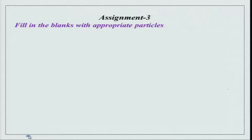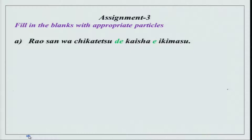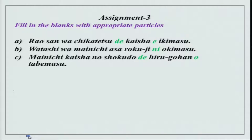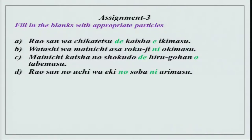The third assignment is fill in the blanks with appropriate particles. We have done a lot of particles: wa, ka, mo, ne, yo, de, ni, o. You need to fill all the particles properly, the ones which fit only. Rao san wa chikatetsu de kaisha e ikimasu. Watashi wa mai nichi asa rokuji ni okimasu — ni is for time. Mai nichi kaisha no shokudou de hiru gohan wo tabemasu — place de activity wo shimasu. Rao san no uchi wa eki no soba ni arimasu. Ni arimasu is for location and existence.